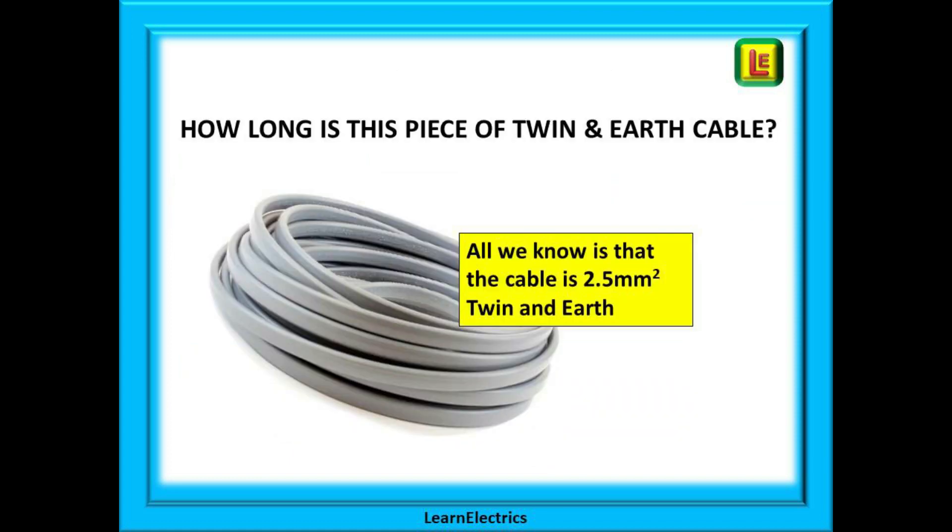So on to real life examples. Here we have a roll of 2.5 millimeter twin and earth cable. We should know from the last slide that the brown and blue conductors are 2.5 millimeters squared and the earth or CPC is 1.5 millimeters squared and those are the standard dimensions for this cable. And that is all that we know about this cable. Yet we have been asked to determine its length. Why?